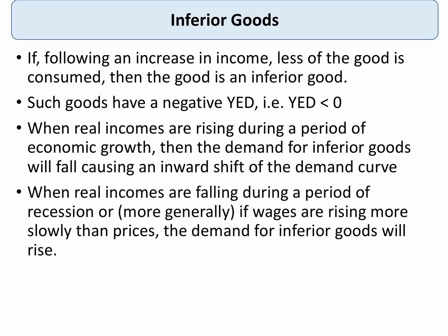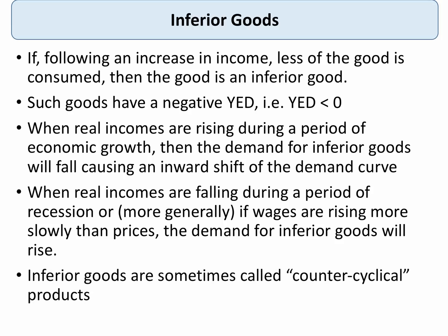Equally, when real incomes and living standards are going down — for example during a downturn, if wages are rising less quickly than prices — oftentimes the demand for inferior goods actually goes up. This is why we sometimes call inferior goods counter-cyclical products: when the economy is in a downturn, the demand for an inferior good may go up.